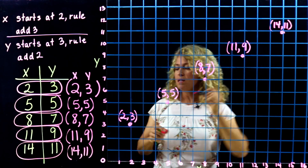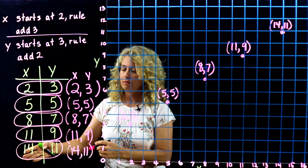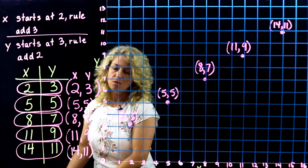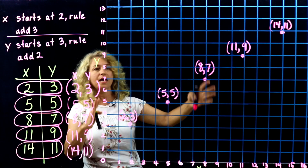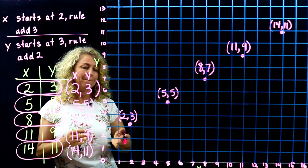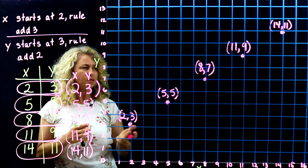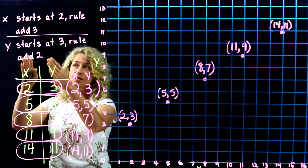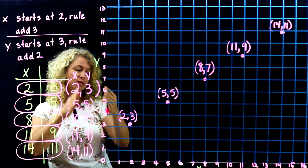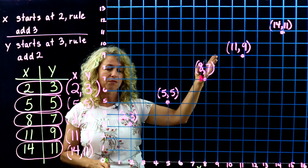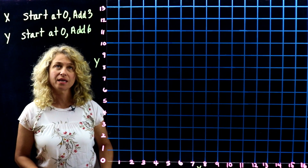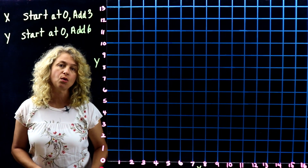You can see this could continue on and on — we could keep extending the pattern, but we only have so much graph. This is a great way to show how patterns correspond, how we can make ordered pairs, and then put them on a graph.